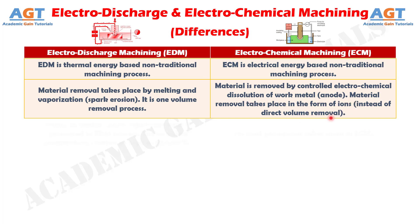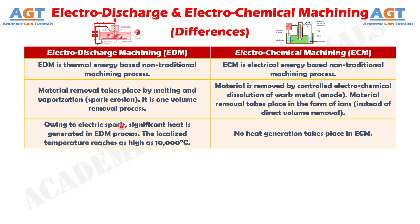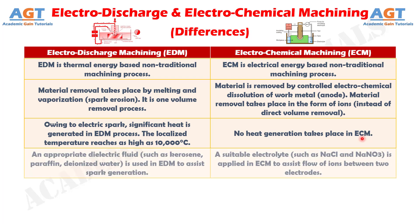Difference No. 3: Owing to the electric spark, significant heat is generated in the Electro-Discharge Machining process. The localized temperature reaches as high as 10,000 degrees Celsius, whereas no heat generation takes place in Electro-Chemical Machining.